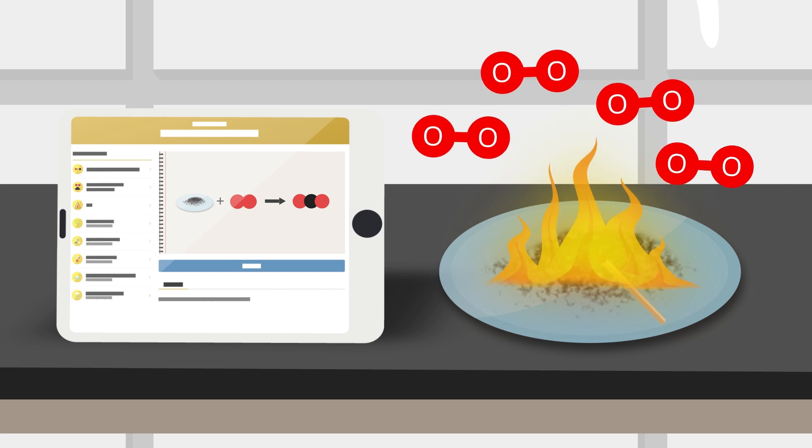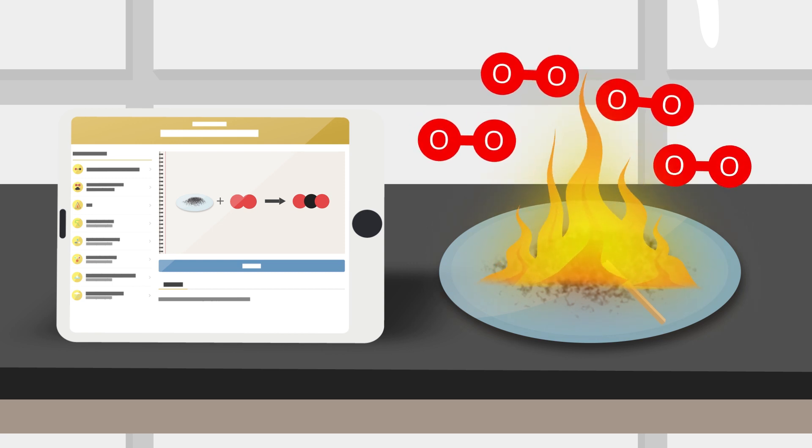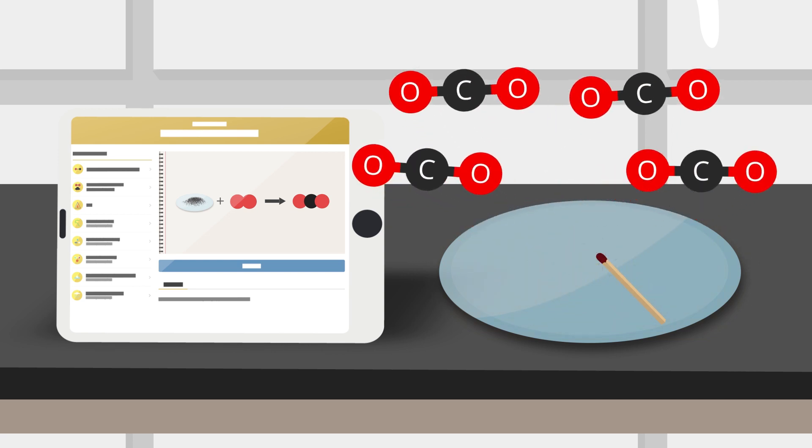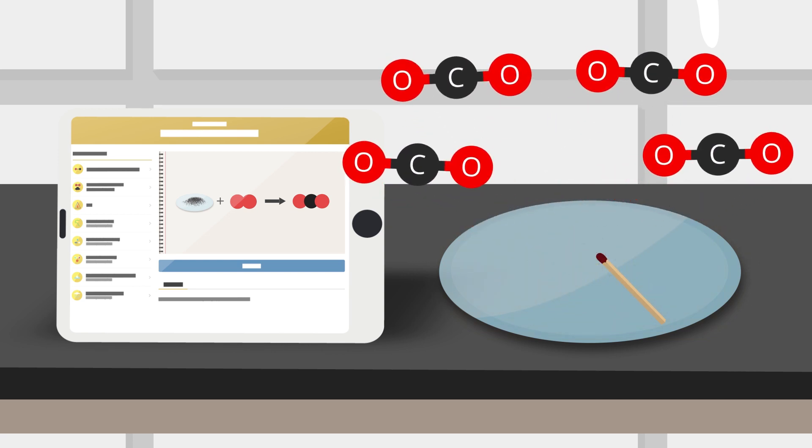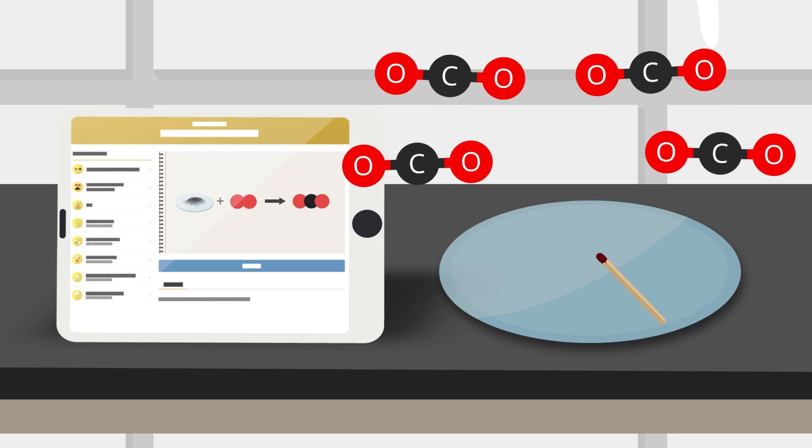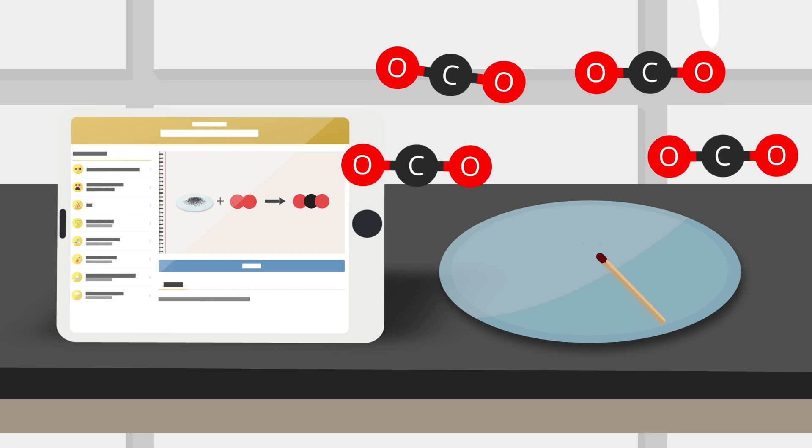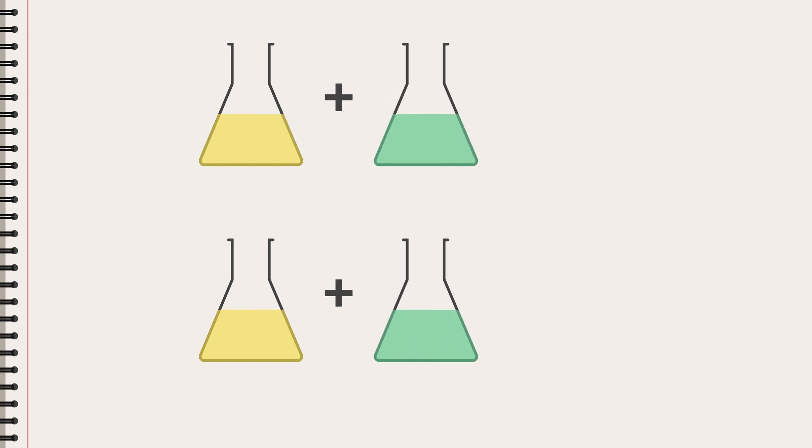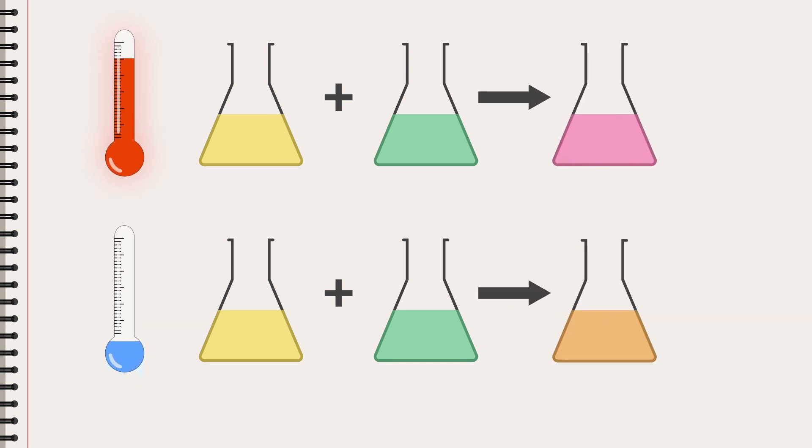Most chemical reactions are pretty predictable. If we know what substances we start with, we know what substances will be formed and we'll get the same result every time those substances react. But sometimes the very same reactants can yield different products.